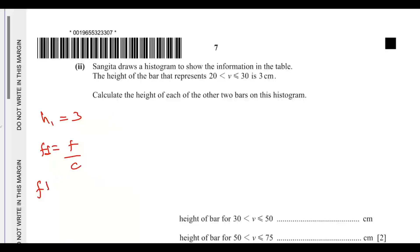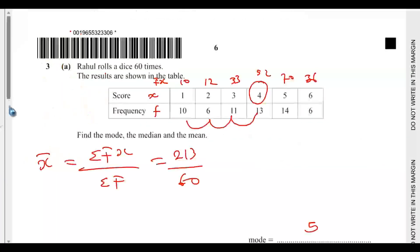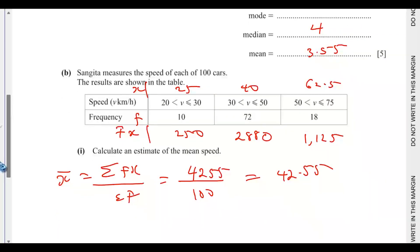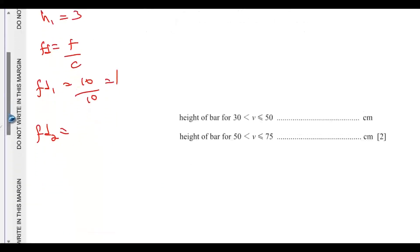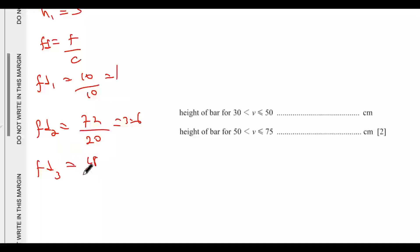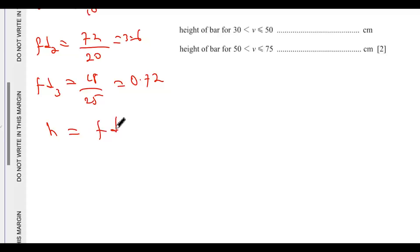So fd1 = 10 ÷ 10 = 1. For fd2: frequency is 72, class width is 50 − 30 = 20, so fd2 = 72 ÷ 20 = 3.6. For fd3: frequency is 18, class width is 25, so fd3 = 18 ÷ 25 = 0.72. Since height is proportional to frequency density, we know h1 = fd1.